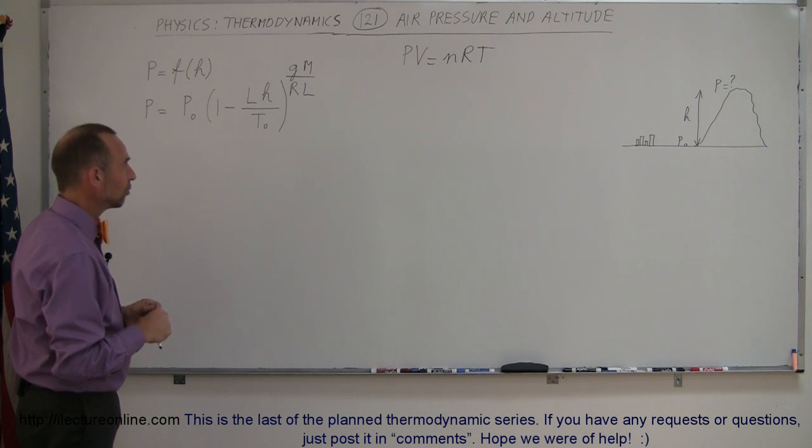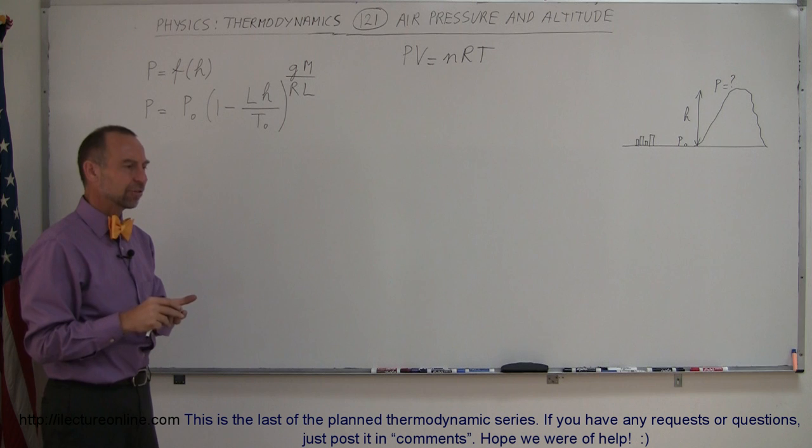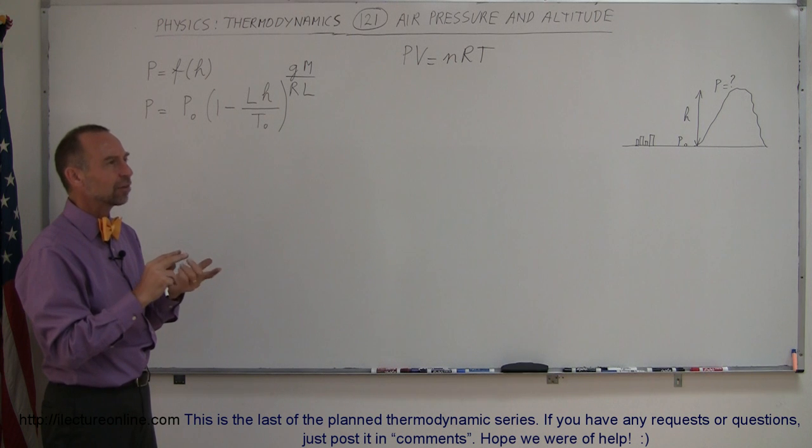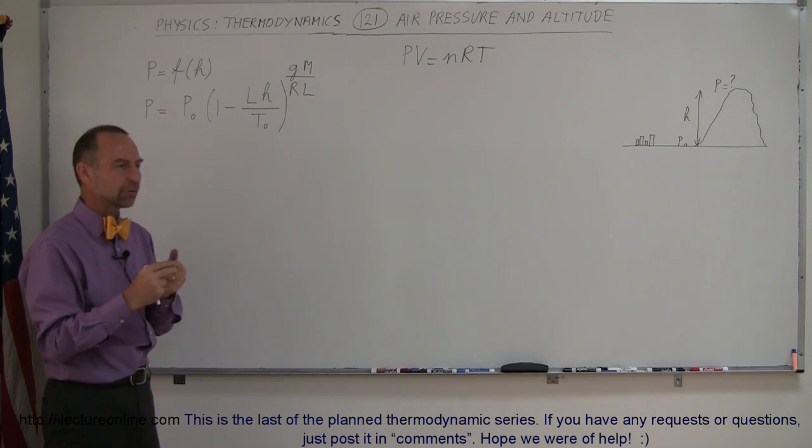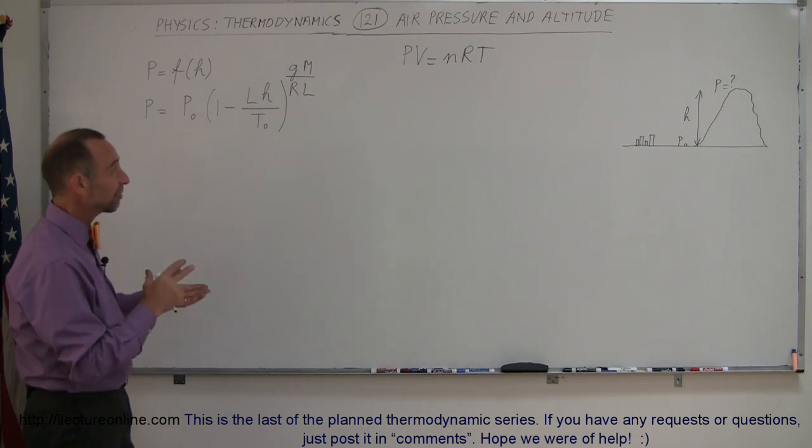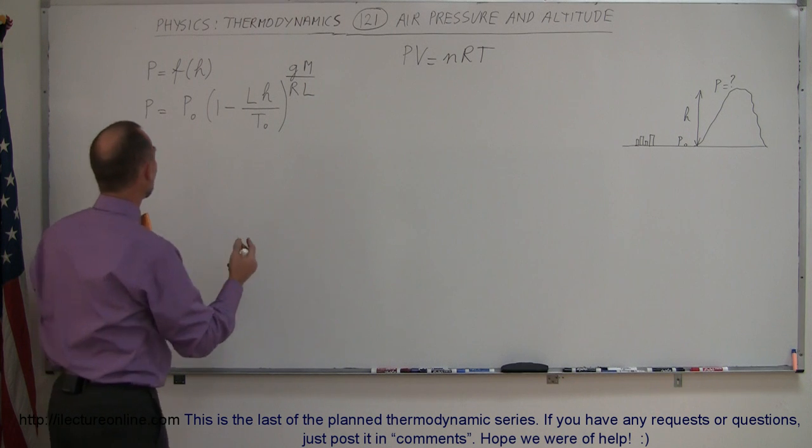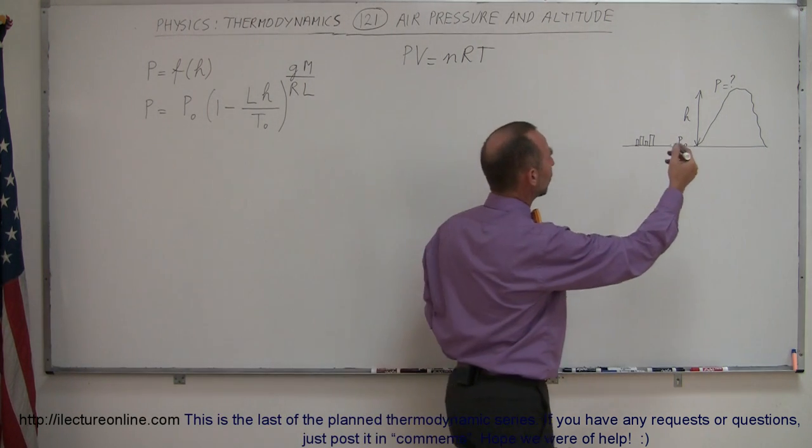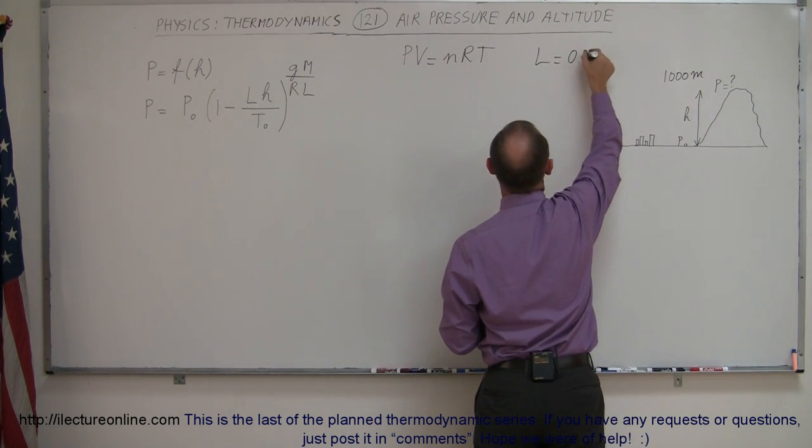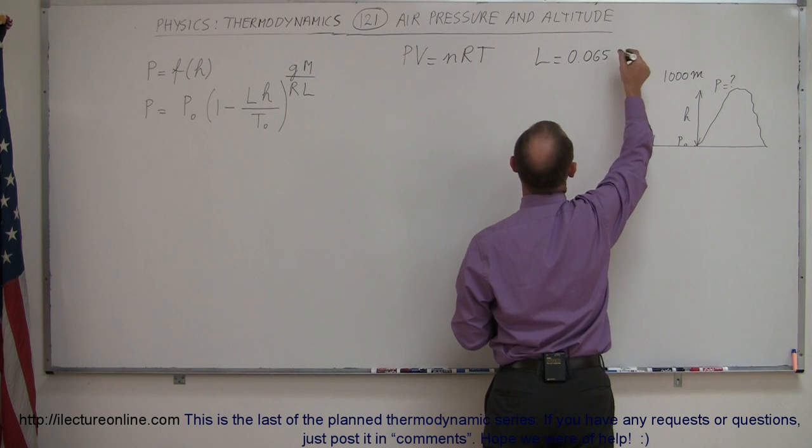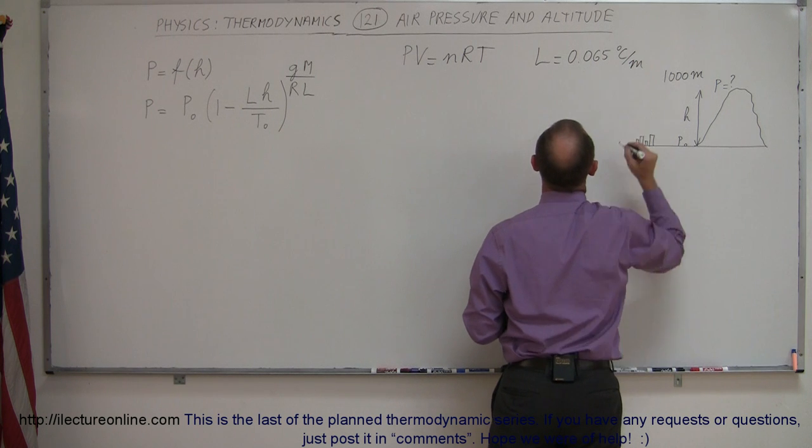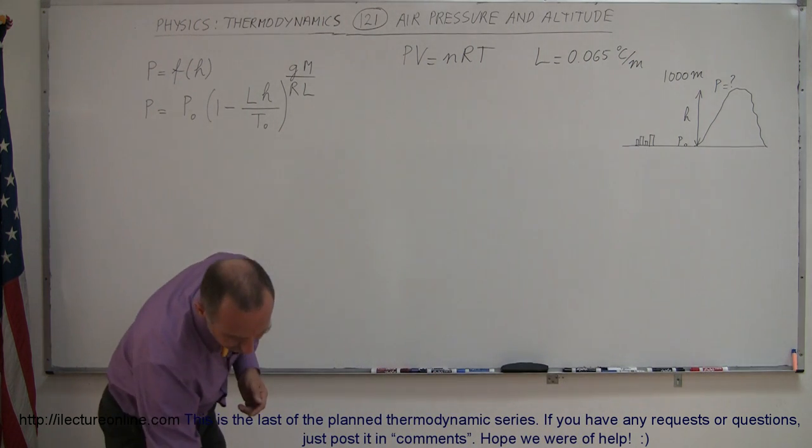So let's put some numbers in there. What is the molar mass of the air? Well the air is primarily nitrogen and oxygen, and so the average mass of the air, since the molar mass of nitrogen is 28 grams per mole and for oxygen is about 32 grams per mole, so the average is about 28 and a half. Okay, so let's plug in some numbers and let's assume that the height of the mountain is a thousand meters. The lapse rate by the way is about 0.065 degrees centigrade per meter.